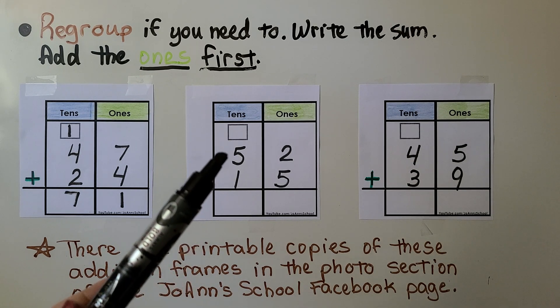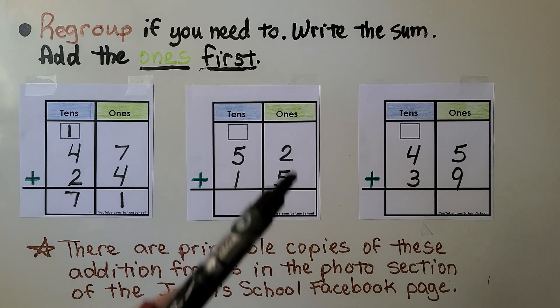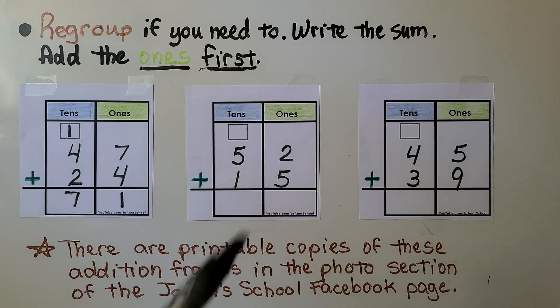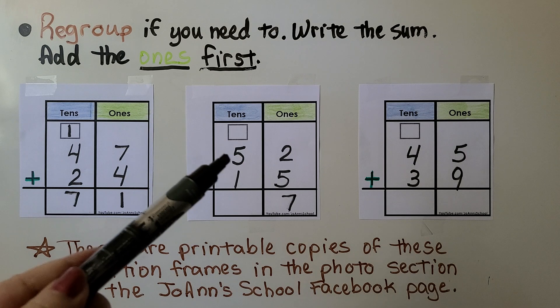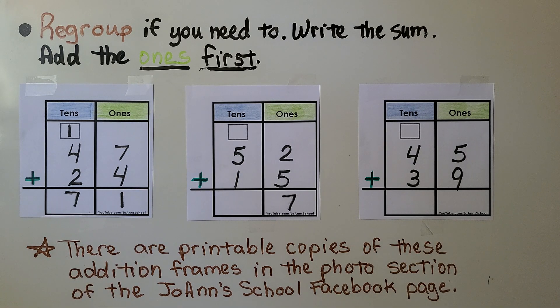Let's try it with this one. We have 52 plus 15. We add the ones. 5 plus 2 more is 7. We didn't have enough to make a ten, so we don't need to regroup. We just add the tens. 5 plus 1 is equal to 6. 52 plus 15 is equal to 67.